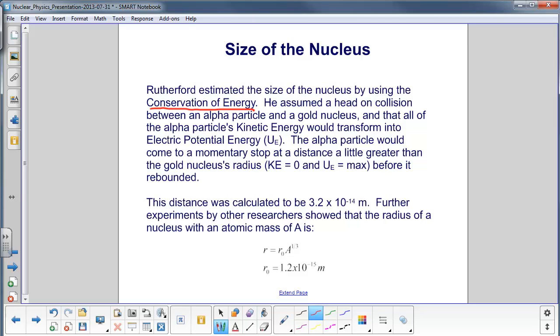All of the alpha particle's kinetic energy would transform into electric potential energy. The alpha particle would approach the nucleus, and as it's getting closer to the nucleus, the nucleus is repelling it because the nucleus has a positive charge as does the alpha particle.